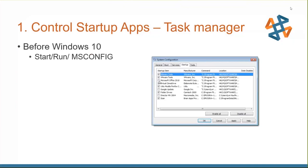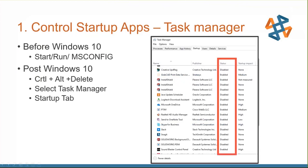Sometimes there are things you really don't need running all the time in Windows — virtual machines, Google, Microsoft OneDrive. In Windows 7 or 8, you'd go to Start, Run, type 'msconfig', and hit Enter to get the System Configuration area. Go to the Startup tab and uncheck things you don't want running at boot. In Windows 10, you can do this from Task Manager — you can see every application that runs and right-click to disable them.